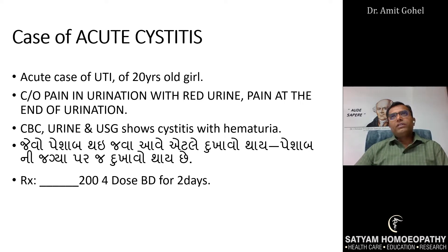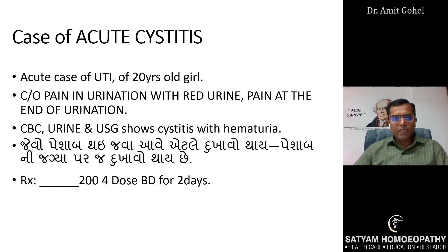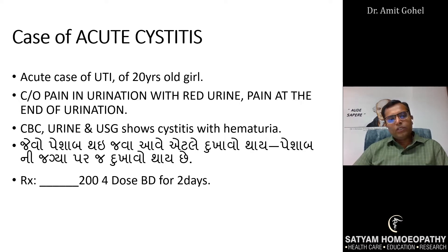The first question I asked was whether she had menses — she said no. So that ruled out menses as a reason for the red urine. She had pain and red urine, so I suspected it may be due to some calculi or infection. I advised her to go for CBC, urine analysis, and USG, and I prescribed the remedy.